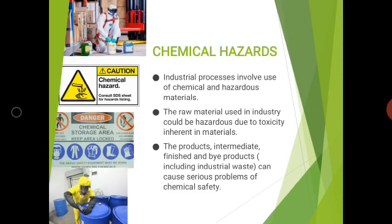Moving on to the next topic — chemical hazards. Many industrial processes involve the use of chemical materials, either as a finished product, intermediate product, or byproduct. Many of these products can be hazardous to workers. The raw materials used in industry could be hazardous because of their toxic nature. All these come under chemical hazardous materials.